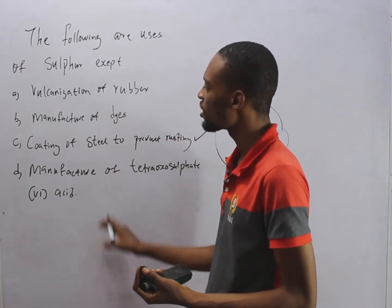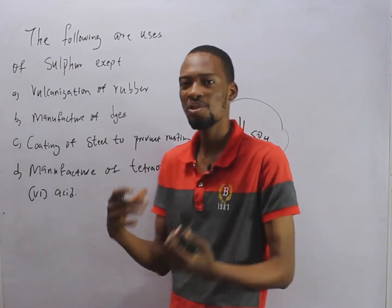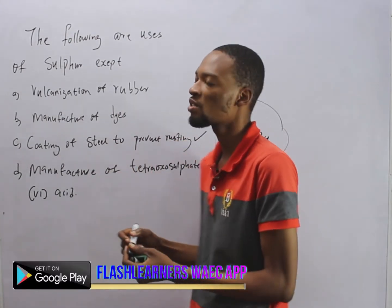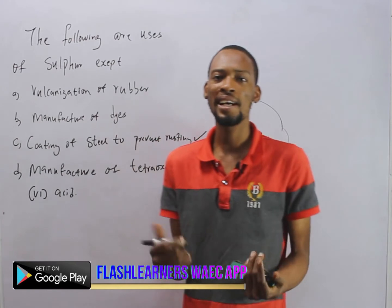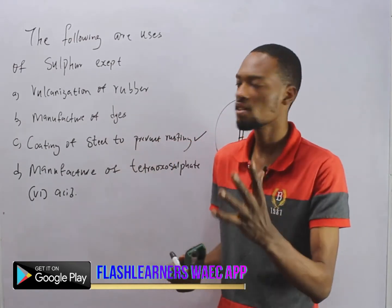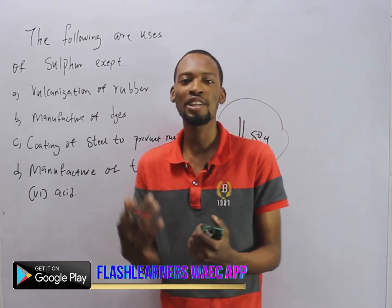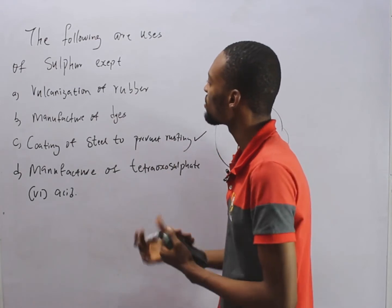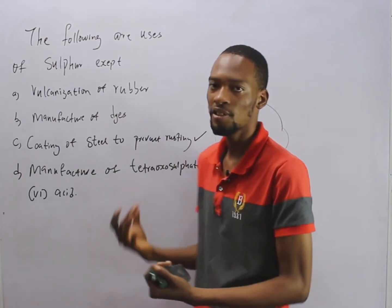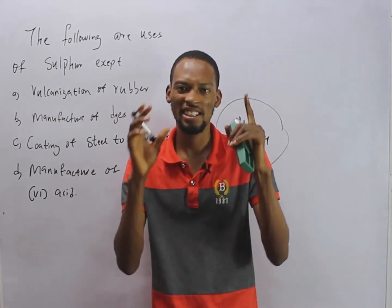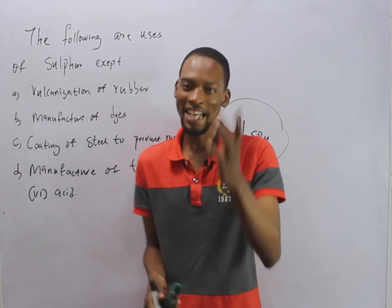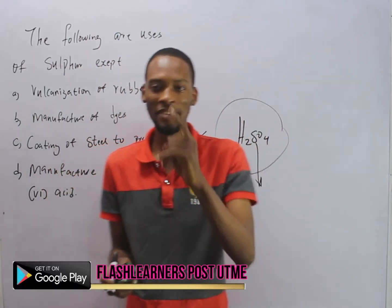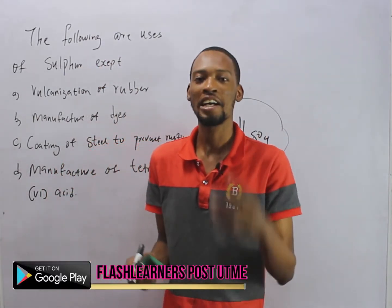We are sure that sulfur is used to manufacture H₂SO₄, it can be used for dyes, and it can be used in the vulcanization of rubber. These are the popular uses of sulfur. So the correct option is C — sulfur can be used for the following except coating of steel to prevent rusting. That is it today on uses of sulfur.